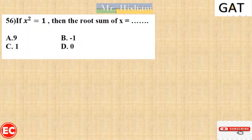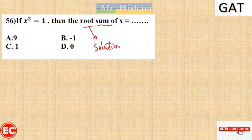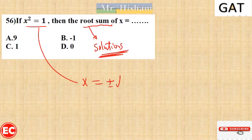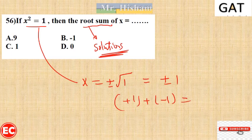Question 56: If x² equals 1, what is the sum of the roots? The roots here means the solutions of the equation. x² = 1 means x equals positive or negative square root of 1, giving roots +1 and −1. Adding them together gives 0. The right answer is D.